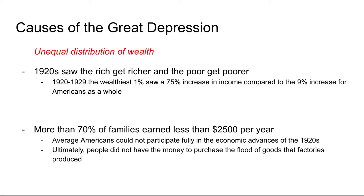The last cause: unequal distribution of wealth. The 1920s was an era of increased wealth in general — the Roaring Twenties, a lot of people prospering. However, the rich were getting richer and the poor getting poorer. Between 1920 and 1929, the wealthiest 1% saw a 75% increase in their incomes versus a 9% increase for Americans as a whole. More than 70% of families were earning less than $2,500 per year. Average Americans couldn't fully participate in the economic advances — the entertainment, luxuriousness, and parties of the '20s. People simply didn't have the money to purchase all the goods factories were producing; there was so much overproduction and not enough people with enough money to buy anything.